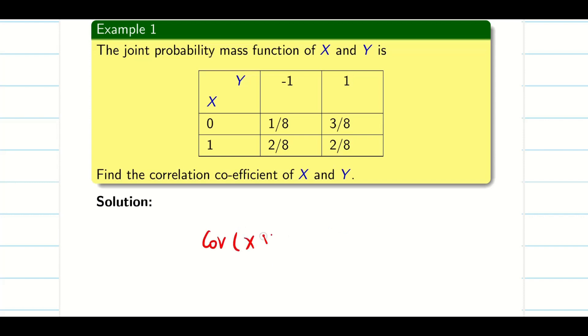We know covariance of X,Y is E of XY minus E of X into E of Y. Ultimately what we need: E of X, E of X square to find the variance of X. Similarly, we need E of Y, E of Y square to find the variance of Y, from which when we take the positive square root, we will find sigma X and sigma Y.